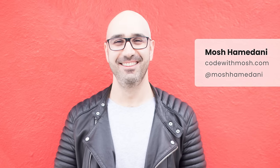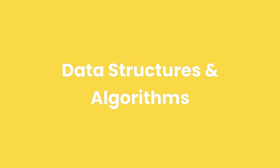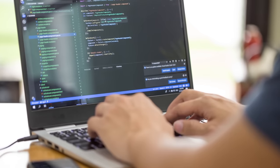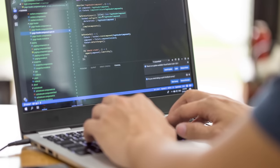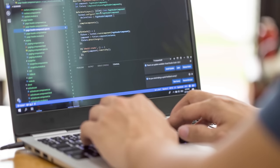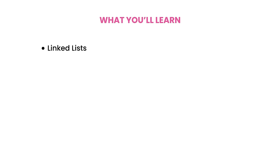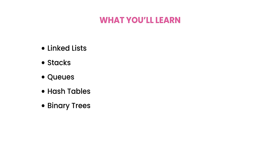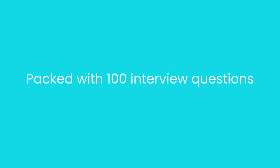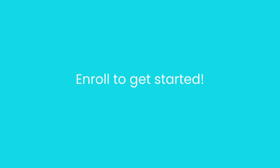This video is part of my ultimate data structures and algorithms course. The complete course is 13 hours long, divided into three parts. It covers linked lists, stacks, queues, hash tables, binary trees, AVL trees, heaps, tries, graphs, and various sorting, searching, and string manipulation algorithms. The course includes almost 100 interview questions from companies like Google, Microsoft, and Amazon. You can watch online or offline and receive a certificate of completion and a 30-day money-back guarantee. Click the link below to enroll.